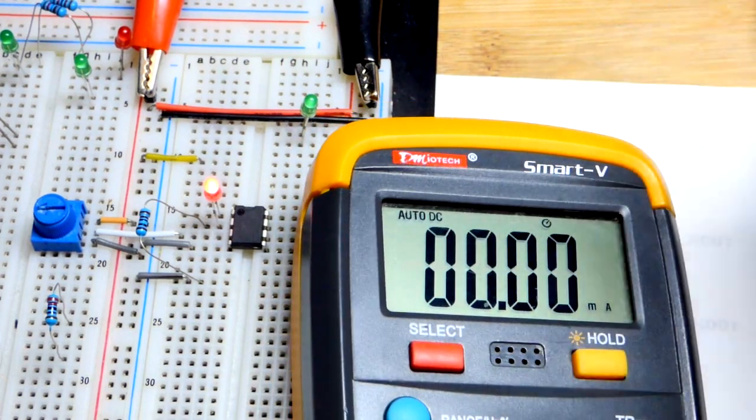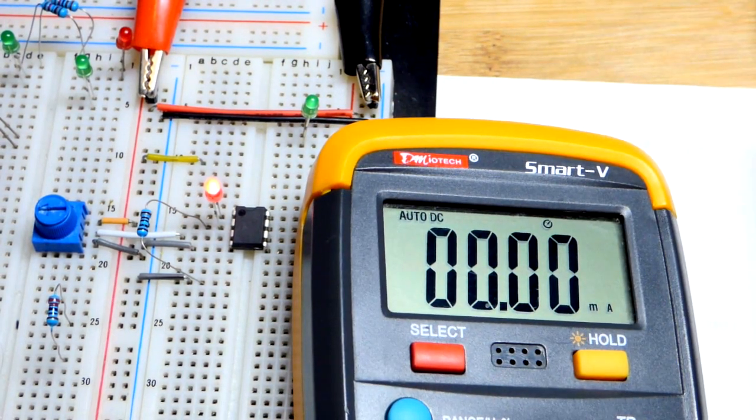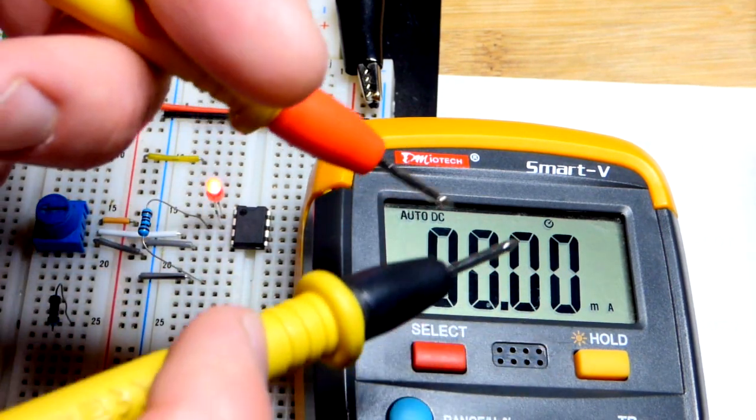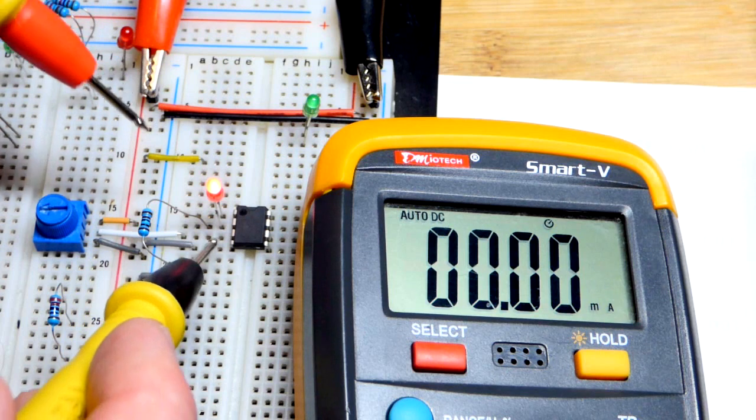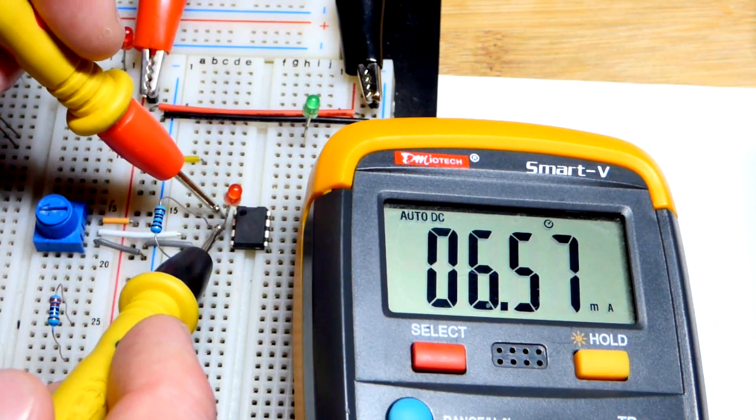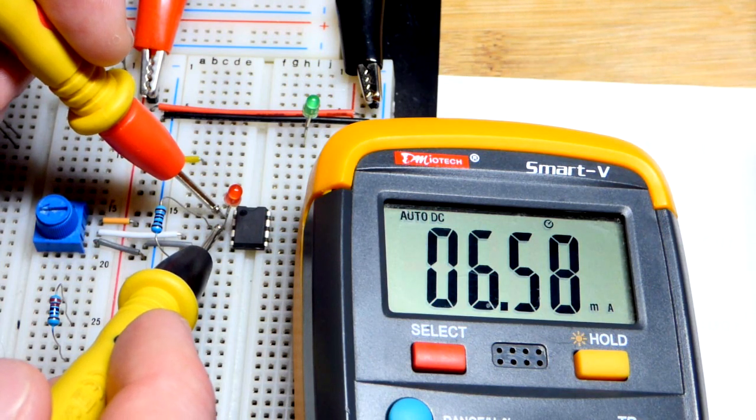So what we're going to do is just short the LED right here. All the current will go through the meter because the LED will be dropping about 1.5 volts and the meter is a short circuit. That will drop it to 0 volts. It will be as if the LED does not exist. And there you can see we got 6.58.